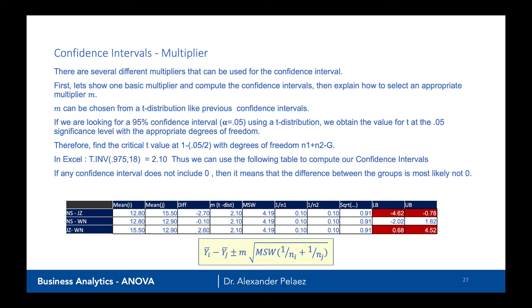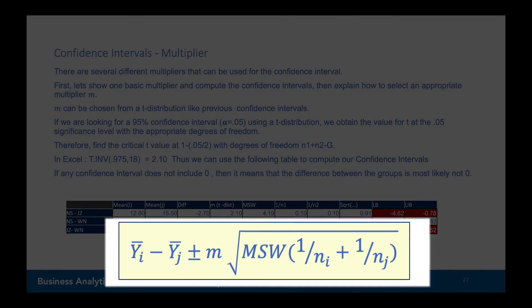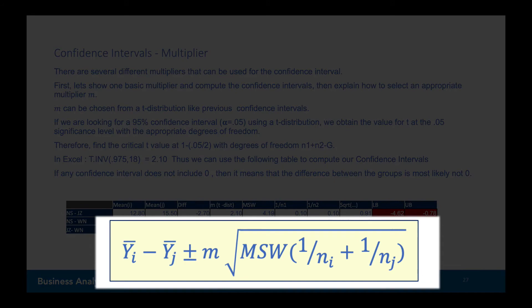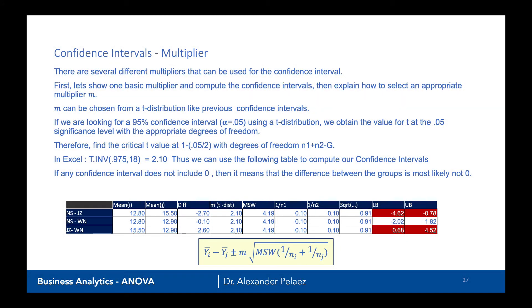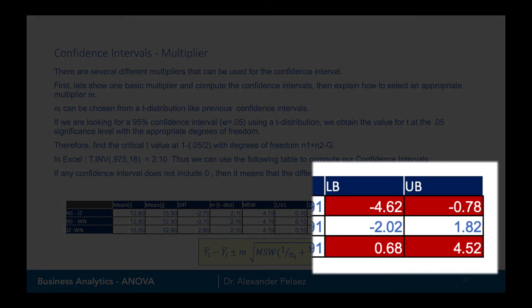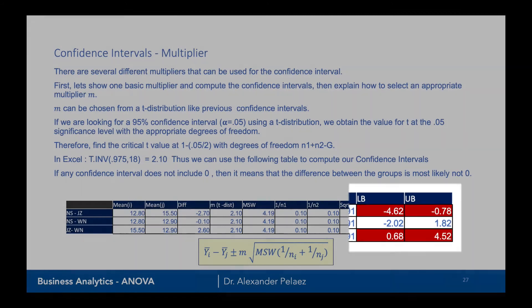We can then compute the confidence intervals by plugging these numbers in to the formula that we had before. This table has each of the individual parts, and we can see that it creates a lower bound and an upper bound. The true difference between the groups will lie between -4.62 and -0.78 for the no sound versus the jazz sound.